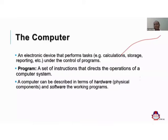Any time we talk about a computer system, we are either talking about the hardware — which refers to the physical components of a computer system that we can feel and touch — or we are talking about the set of working programs, which we call software. The hardware is a physical component, and the software is what brings life or identity to the hardware.